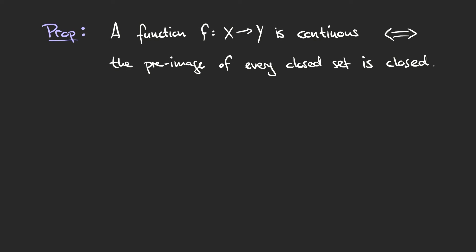The following proposition shows that we could have chosen a different definition — namely, continuity in terms of closed sets rather than open sets. The proposition states that a function f from X to Y is continuous precisely when the pre-image of every closed set is closed. We've just replaced the word 'open' in our previous definition with 'closed,' and in fact this gives an equivalent definition. The proof is just by taking complements.